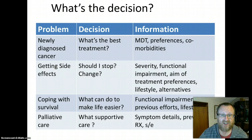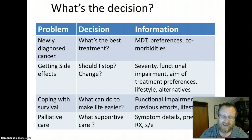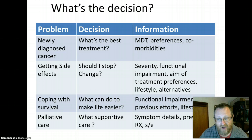If you ask what the decision is for each type of case, you get a different answer. For a newly diagnosed cancer, the decision is what's the best treatment — and critical information includes patient preferences, comorbidities, and MDT discussion. If the problem is side effects, the focus is whether to stop or change treatment, and the critical information includes severity, functional impairment, aim of treatment, patient preferences, lifestyle impact, and available alternatives.